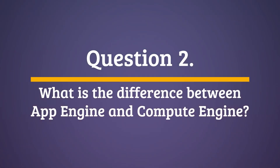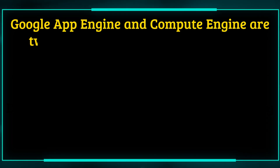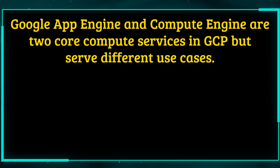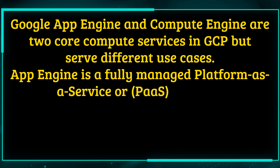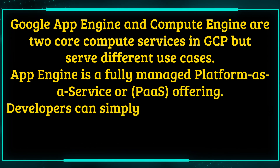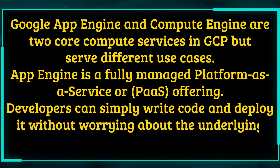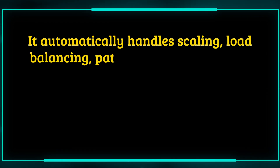Question 2. What is the difference between App Engine and Compute Engine? Google App Engine and Compute Engine are two core compute services in GCP but serve different use cases. App Engine is a fully managed platform as a service, or PaaS, offering. Developers can simply write code and deploy it without worrying about the underlying infrastructure. It automatically handles scaling, load balancing, patching, and monitoring.